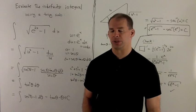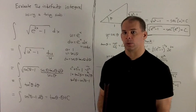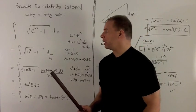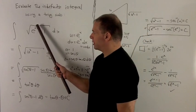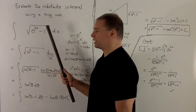Evaluate the indefinite integral using a trig substitution. We're looking at the integral of radical e to the 2x minus 1 dx. If we look at this, this is the square of something, so we're going to be looking at a secant substitution.